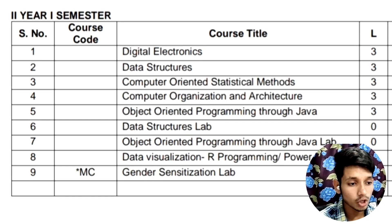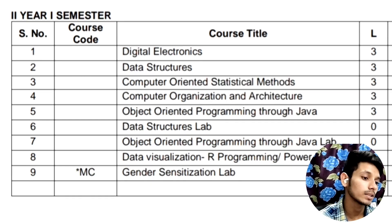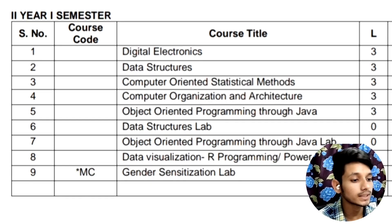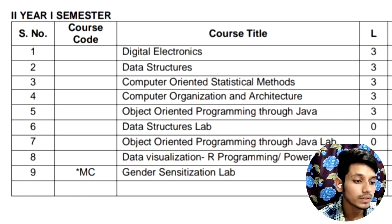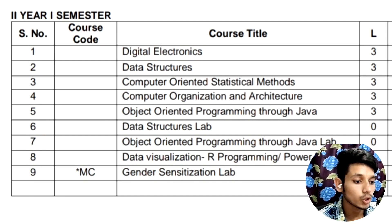In the first semester of your second year, you will be having the subjects Digital Electronics, Data Structures, Computer Oriented Statistical Methods, Computer Organization and Architecture, and Object Oriented Programming through Java. Labs include Data Structures, Object Oriented Programming through Java, Data Visualization, and a lab for Gender Sensitization.